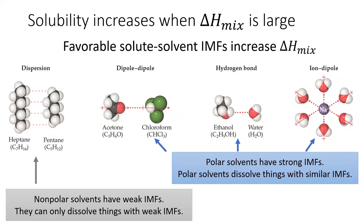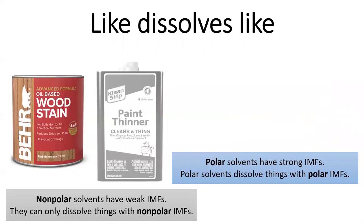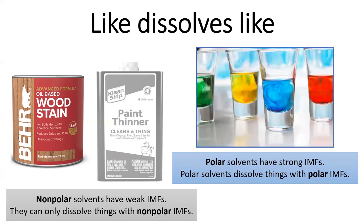Non-polar things can only dissolve other non-polar things. This is summarized by the aphorism "like dissolves like." Non-polar solvents like paint thinner cannot break apart polar IMFs, but they are great at dissolving other non-polar things like oil-based paints, because both compounds have similarly weak IMFs. A polar solvent like water is great at dissolving polar compounds; however, water will not dissolve non-polar compounds because water would rather keep its strong water-water interactions than form weak IMFs between the water and the non-polar substance.